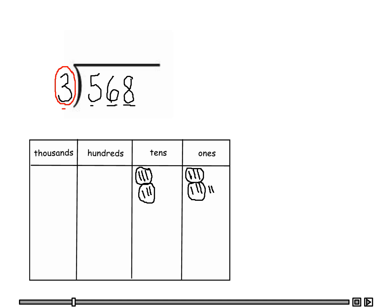Now let's move over to the hundreds place. Here we have five: one, two, three, four, five. We only have one group of three in the hundreds, so you notice we have two left over. As you can see, the divisor is three, so we can't take divisor three into two.